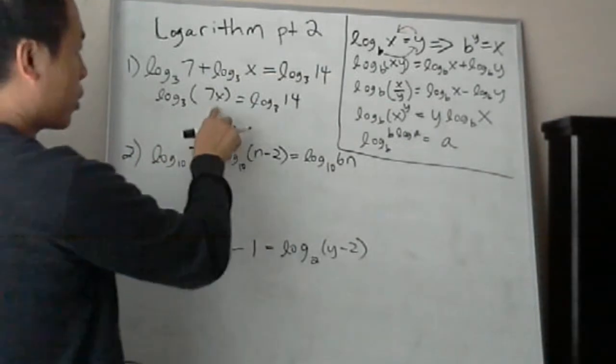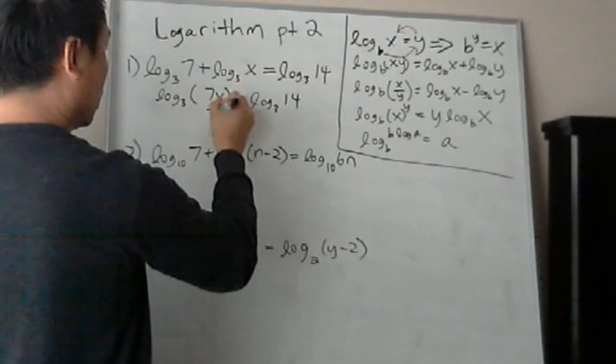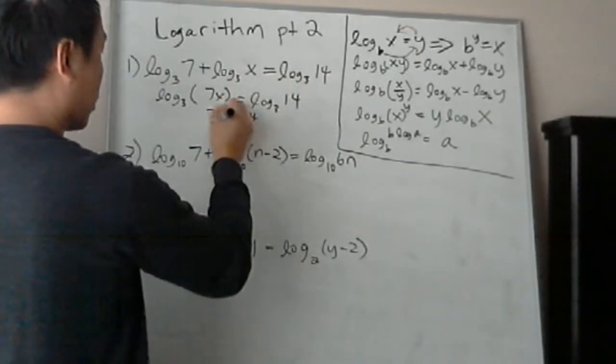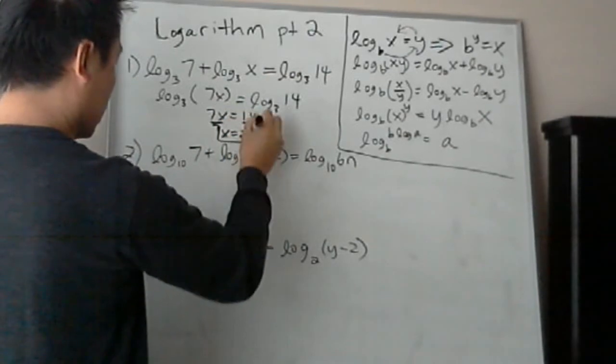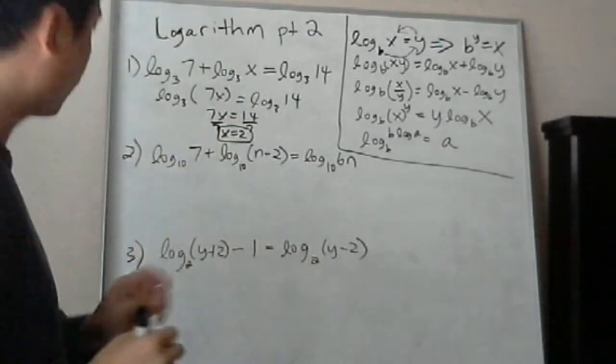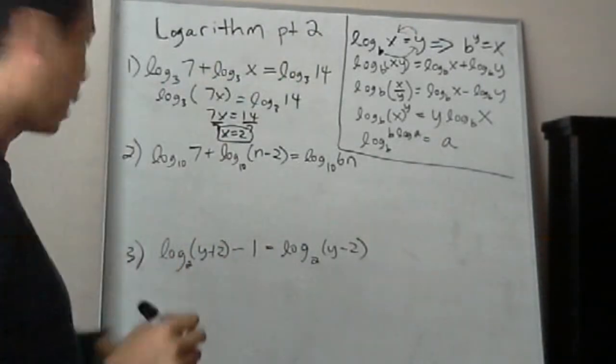So you have 7x. But you're working from here to here instead. It's just going backwards. So 7x, the bases are the same, so now you can set these to equal. So 7x equals to 14. Divide 7 on both sides. And you'll get x equals 2. Pretty simple problem.